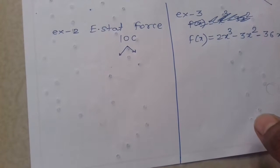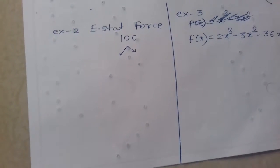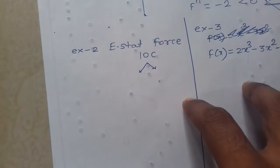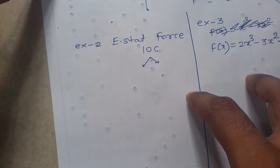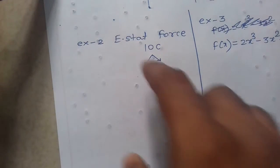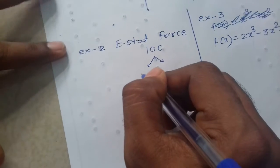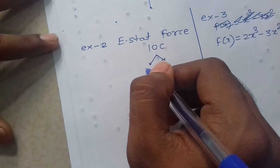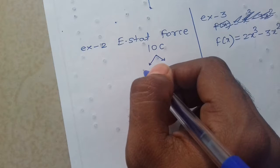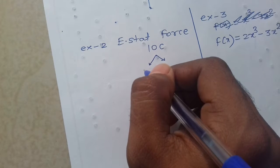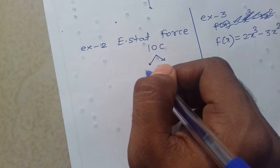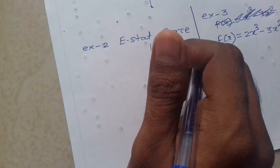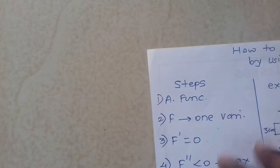For maxima minima, second example: there is a charge of 10 coulomb, usko divide karna hai into two charges, and ishtara se divide karna hai such that force between them is maximum. So total charge provided is 10 coulomb. The first step is assumption of function.